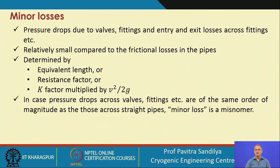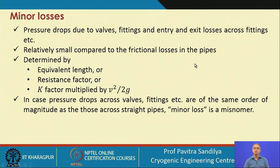We come to minor losses. When we say minor loss, it does not mean their magnitudes are less than the major losses — the name is given to differentiate them from the losses in actual pipe length. These include valves, fittings, entrance and exit losses. They are relatively small compared to frictional losses in long pipelines because fittings and valves are not used as frequently as long straight pipe sections; they are used for control purposes, joining pipes, or changing flow direction.